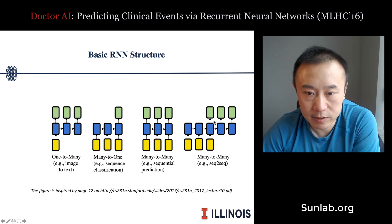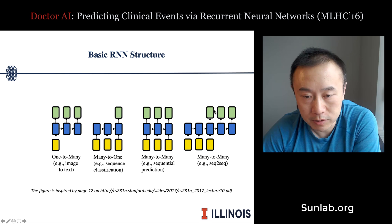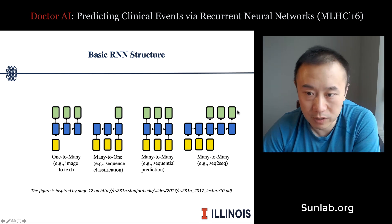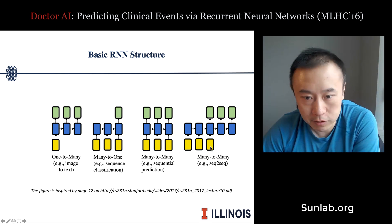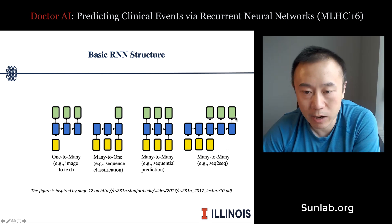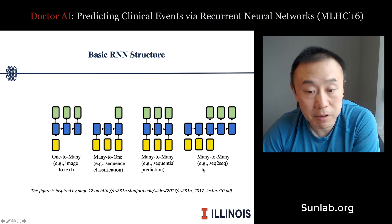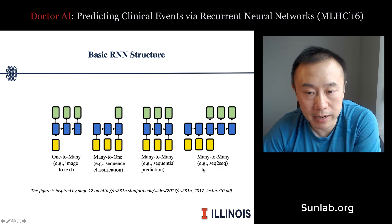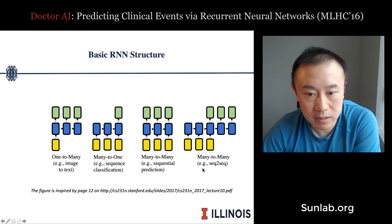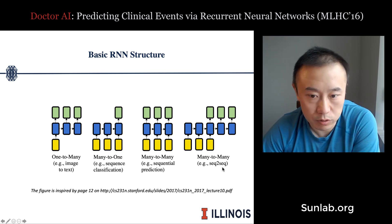In some cases the input and output sequences can have different lengths — for example, the input could be a Chinese sentence and the output an English sentence. This can be achieved by two different RNNs put together, called a sequence-to-sequence model.